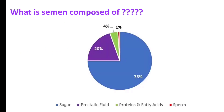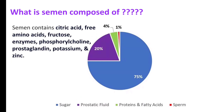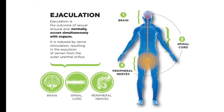What is semen composed of? The main component is seminal fluid — about 75% sugar. It also contains prostatic fluid, proteins, fatty acids, and sperm. Semen additionally contains citric acid, free amino acids, fructose, enzymes, phosphoryl choline, prostaglandins, potassium, and zinc.